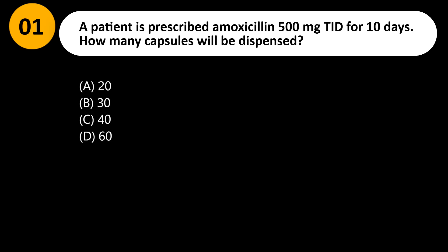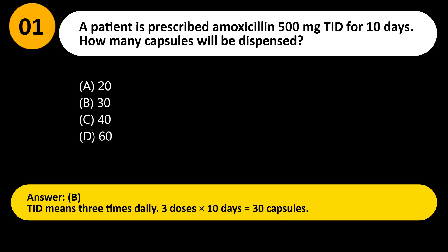A patient is prescribed amoxicillin 500 milligrams TID for 10 days. How many capsules will be dispensed? A) 20, B) 30, C) 40, D) 60. Answer: B. TID means three times daily. Three doses times 10 days equals 30 capsules.